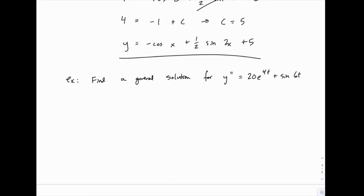We can do the same thing we've done before, but notice that we'll have to integrate twice. After we integrate the first time, we'll have the value of y prime, and then integrating a second time will give us the value of y. So y prime equals the integral of 20e to the 4t plus sine of 6t.